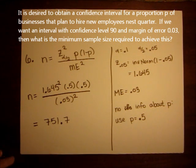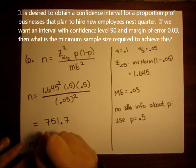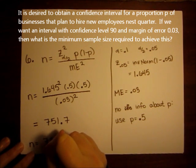So again, N is always a whole number, and I always round up. So my answer would be 752.